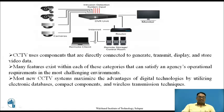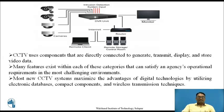Here you can see how a CCTV works. There are different types of cameras used, and the output of these cameras is given to a DVR unit, which includes a high-end RAM that stores the data and also gives output to the monitor. The output of the DVR can also be given to a router, through which the video signals can be sent to the internet so that a remote client or remote storage of these video signals can be done. Hence in CCTV, we can see video recording on a monitor as well as on the internet using a remote client and router unit.